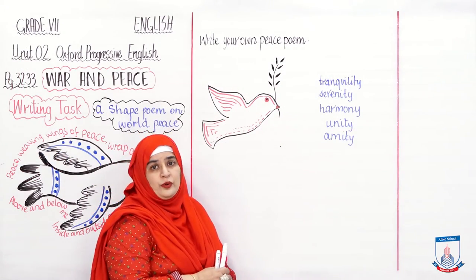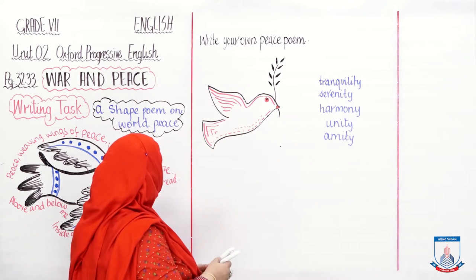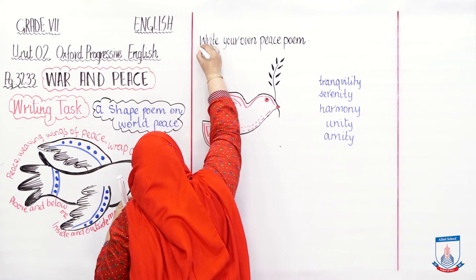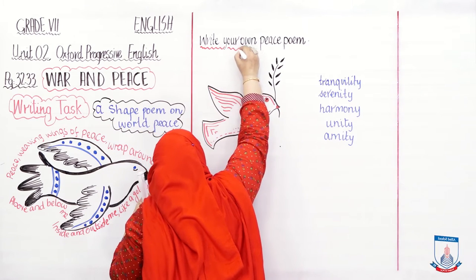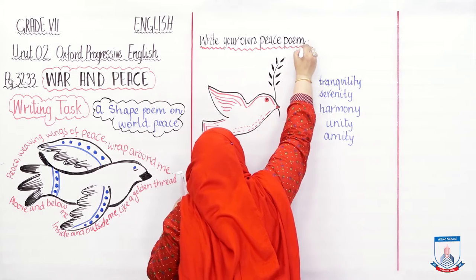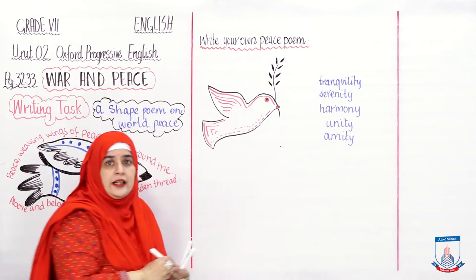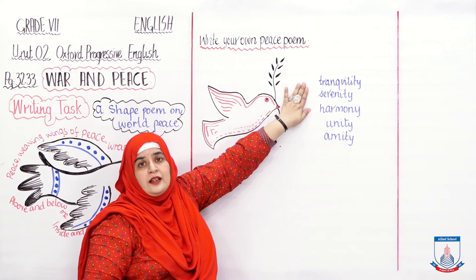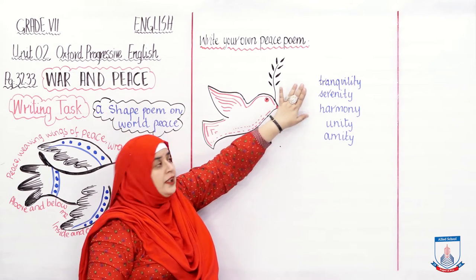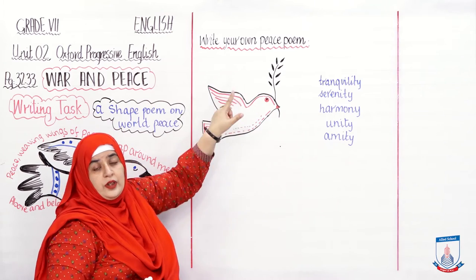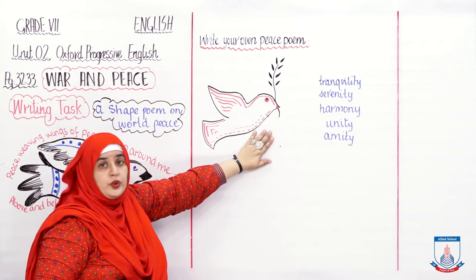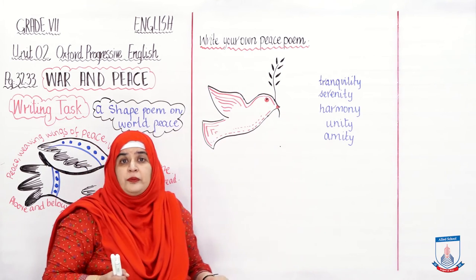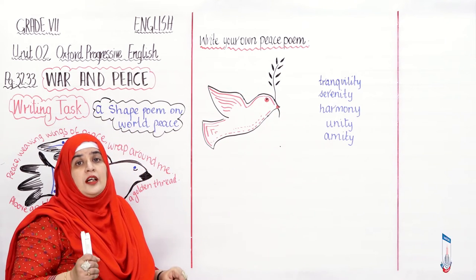Ji beto, unhone aap sikhaya hai ke write your own peace poem — apni peace poem likho. Aapko yeh kaha gaya hai ke yahan aap apni dove dubara banayen, aur is copy karen. Yeh words aapko diye gaye hain word bank mein — yeh word bank use karen, ek poem likhen around a dove. Dove maine aapko draw kar di; meri dove mein maine olive tree ki branch bhi daal di taake aapko clear ho jaye.